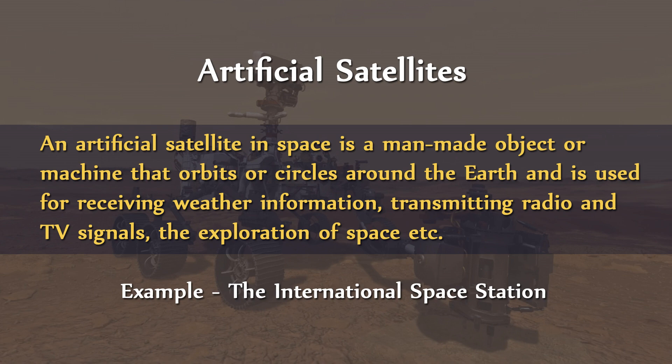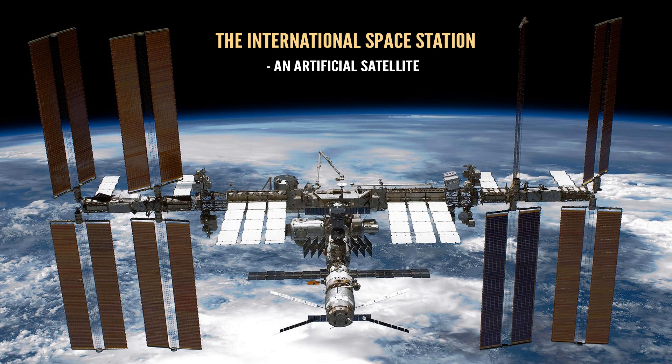For example, the moon orbiting the Earth. Number two, artificial satellite. An artificial satellite in space is a man-made object or machine that orbits or circles around the Earth, and is used for receiving weather information, transmitting radio and TV signals, and the exploration of space etc. For example, the International Space Station orbiting the Earth.